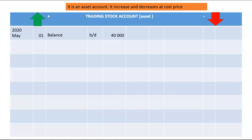There are two ways in which you can purchase trading stock: either for cash or on credit. If you purchase trading stock for cash, you will debit trading stock and credit bank. This is recorded in the Cash Payments Journal (CPJ), and in this example the amount is 80,000.